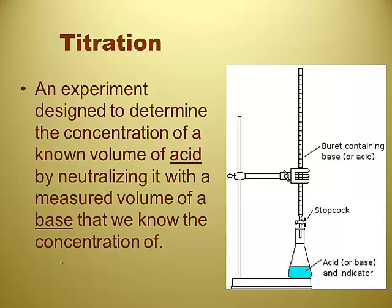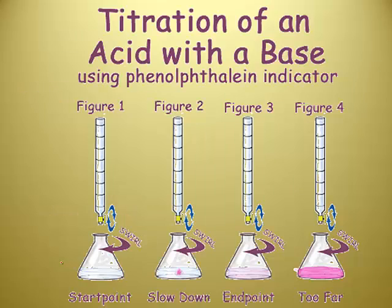We use an indicator to help us out because different indicators have different color changes. In this particular case, we want phenolphthalein because we want an indicator to change at neutral. And a strong and a strong will be 7.00 pH neutral. As long as it's a strong and a strong. So phenolphthalein turns pink, a light pink color when it's at its end point, when it's at neutral, kind of a little slightly on the basic side, just a smidge. So you want to be kind of careful.